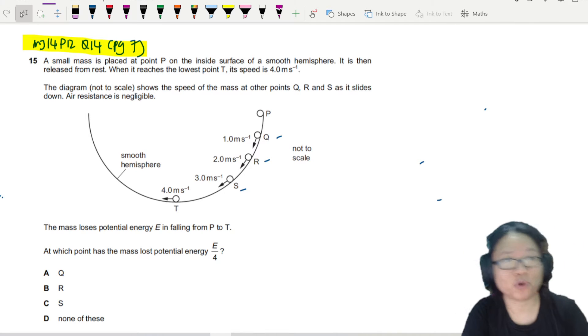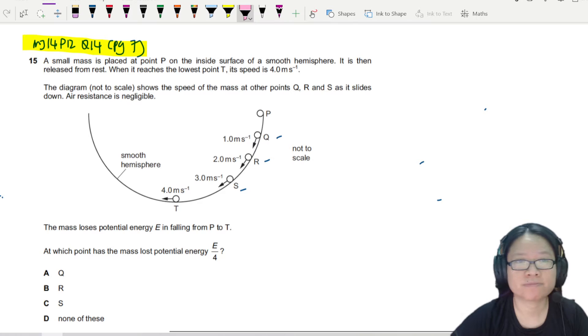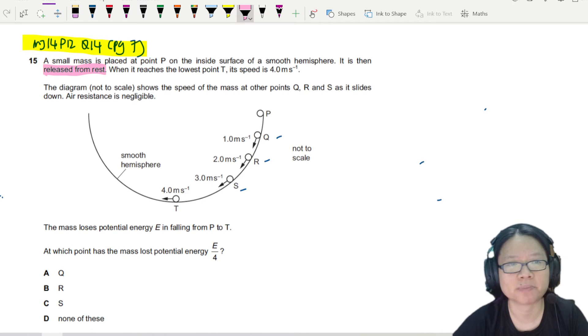In this example, we are going to look at a small mass inside a smooth hemisphere or a boat. Let's read the question. It is released from rest. So the small mass is released from rest at P. When it reaches the lowest point T, the speed is 4 meters per second.